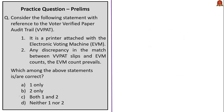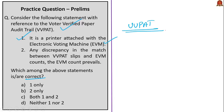This question is with respect to VVPAT — Voter Verified Paper Audit Trail. Two statements are given. The first statement: it is a printer attached with the Electronic Voting Machine. This is correct because VVPAT is an independent system attached with EVMs that allows voters to verify their votes — checking whether the vote was cast as intended. It is kept in the voting compartment.